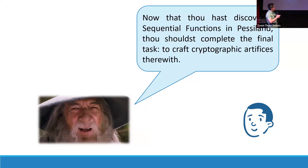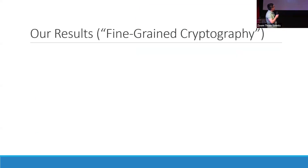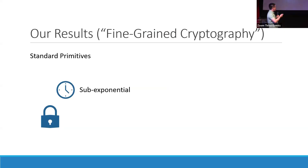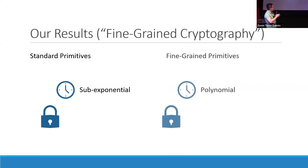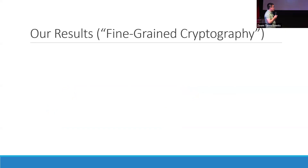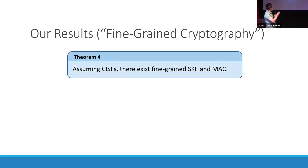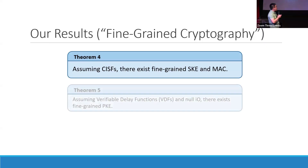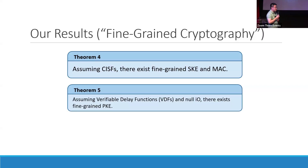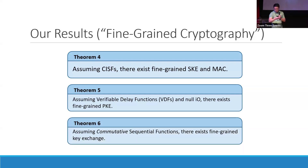The second task is constructing cryptographic primitives using sequential functions. We didn't construct standard primitives that are secure up to a sub-exponential amount of time, but rather we construct primitives in a fine-grained setting, which only achieve security up to a polynomial amount of time. We show three results: first, from CISFs we construct SKEs and MACs; second, we construct fine-grained PKE from verifiable delay functions and NC1 circuits; and third, we construct key exchange from commutative sequential functions.